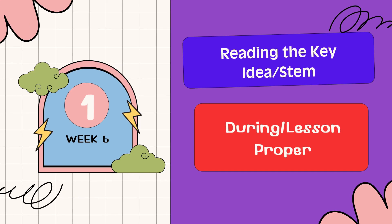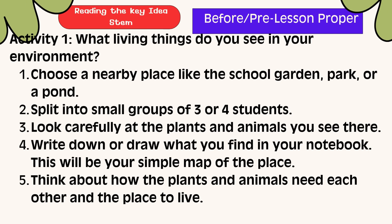Reading the Key Ideas. Activity 1: What living things do you see in your environment? Number 1: Choose a nearby place like a school garden, park, or pond. Split into small groups of 3 or 4 students. Look carefully at the plants and animals you see. Write down or draw what you find in your notebook.